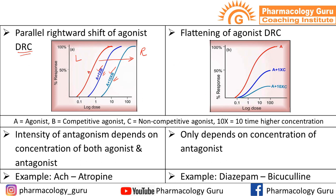In non-competitive antagonism, you can never achieve the maximum response by increasing the agonist concentration. As you increase the antagonist concentration, the maximum response decreases and the DRC gets flattened. This flattening of the agonist dose-response curve is the characteristic of non-competitive antagonism. So by looking at the graph: parallel rightward shift indicates competitive antagonism, and flattening of the DRC indicates non-competitive antagonism.